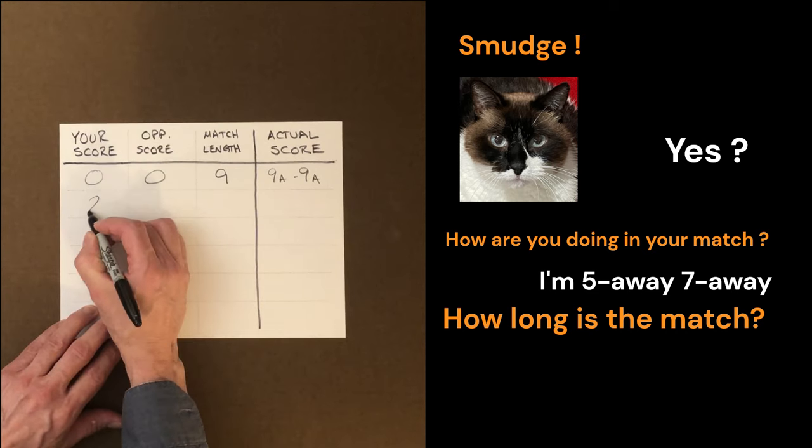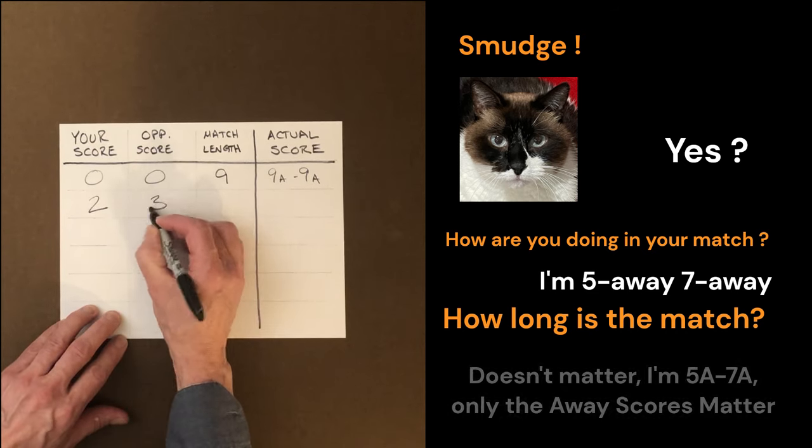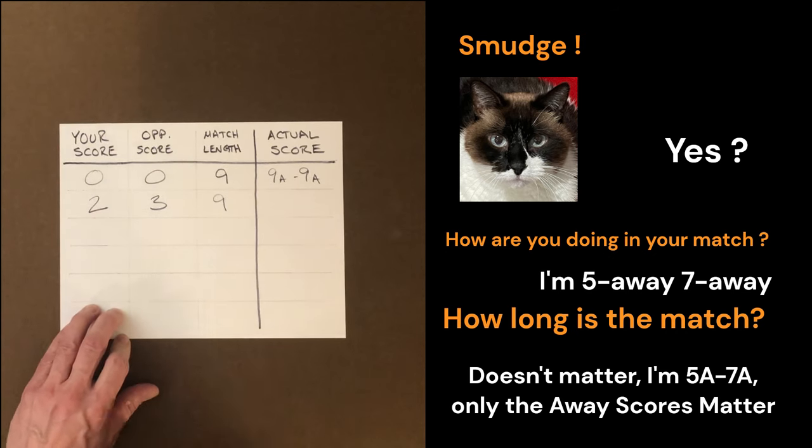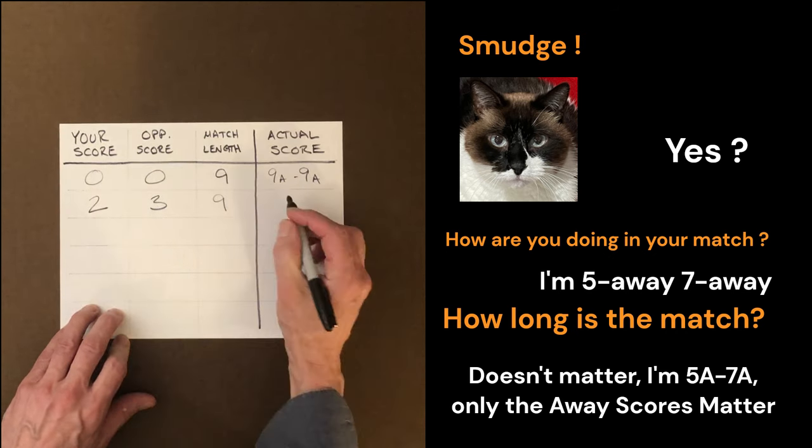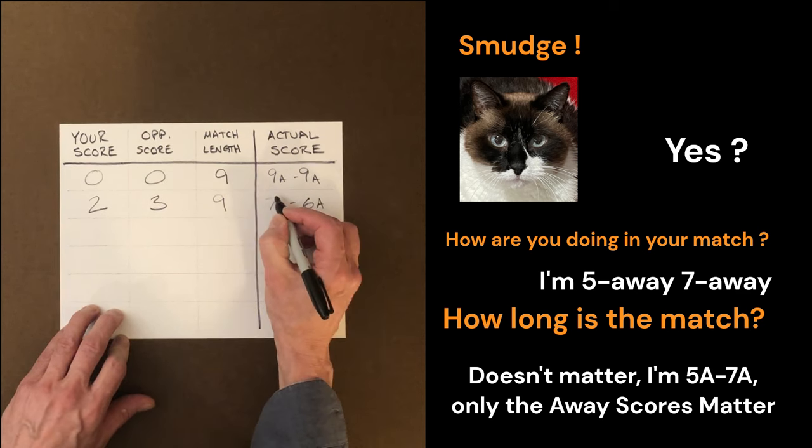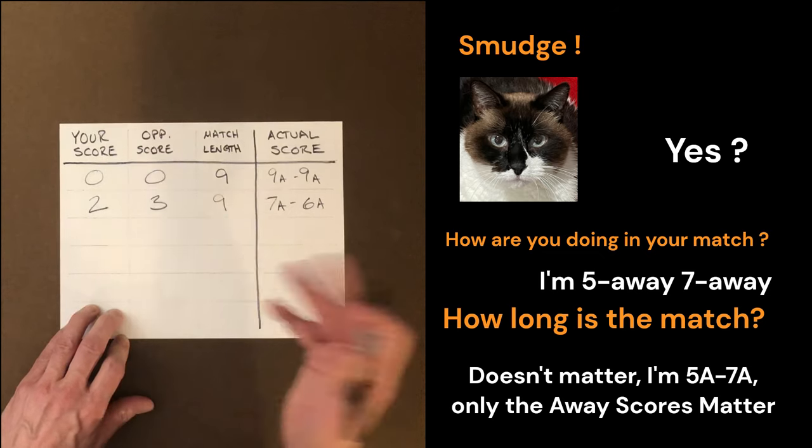Another example. Our score is two, our opponent's score is three in a 9-point match. This match score is 7 away 6 away. Very easy.